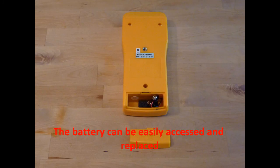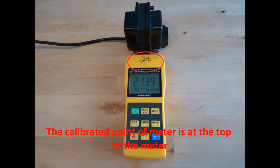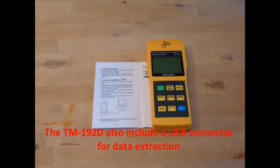The battery can be easily accessed and replaced. The calibrated point of the meter is at the top of the meter. The TM192D also includes a USB connector for data extraction.